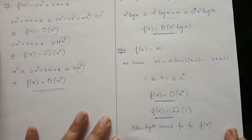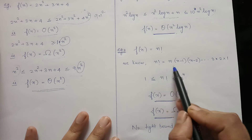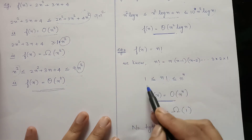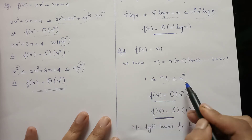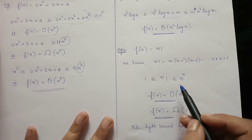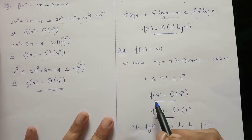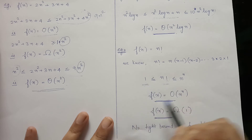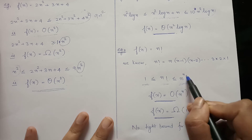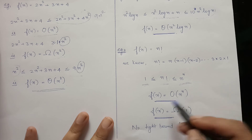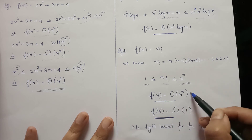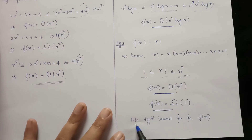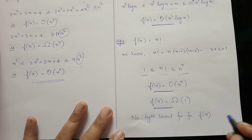Coming to the third example, f(n) = n factorial. We know that n! = n × (n−1) × (n−2) × ... × 1. Here we can represent the lower bound of n! as 1, and the upper bound of n! as n raised to n. So f(n) can be represented as Big-O of n^n, whereas the lower bound of f is Omega of 1. We can see that there is no tight bound for this function f(n) = n!.